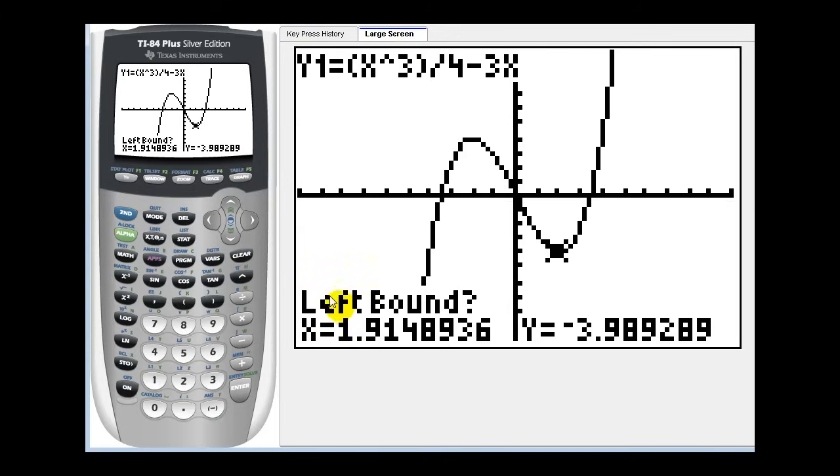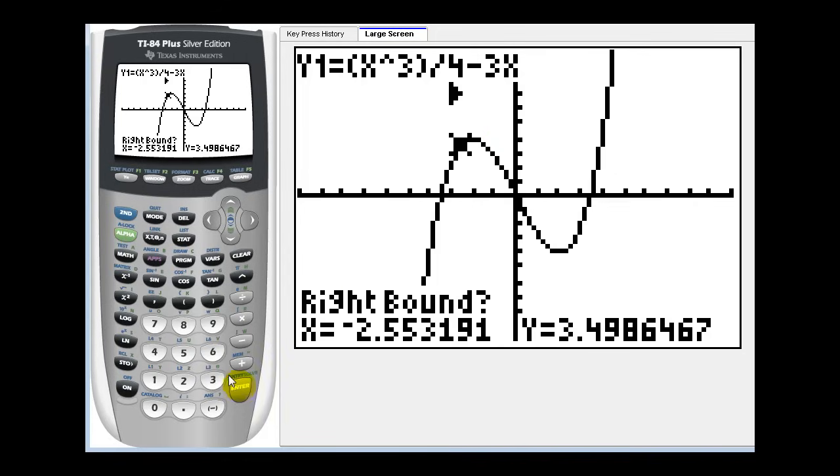Again it's asking us for the left bound, we need to be the left of this point here. So we'll hit the left arrow, you can hold it down if you want, it'll scroll automatically. Now we're to the left of this point, so we'll press enter. Now ask for the right bound, move to the right side of the relative maximum, press enter.